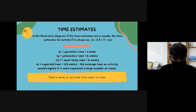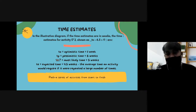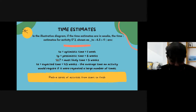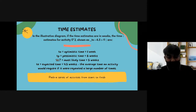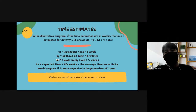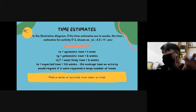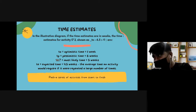How do we determine the critical path? The critical path is determined by adding the days or the time on each network path.